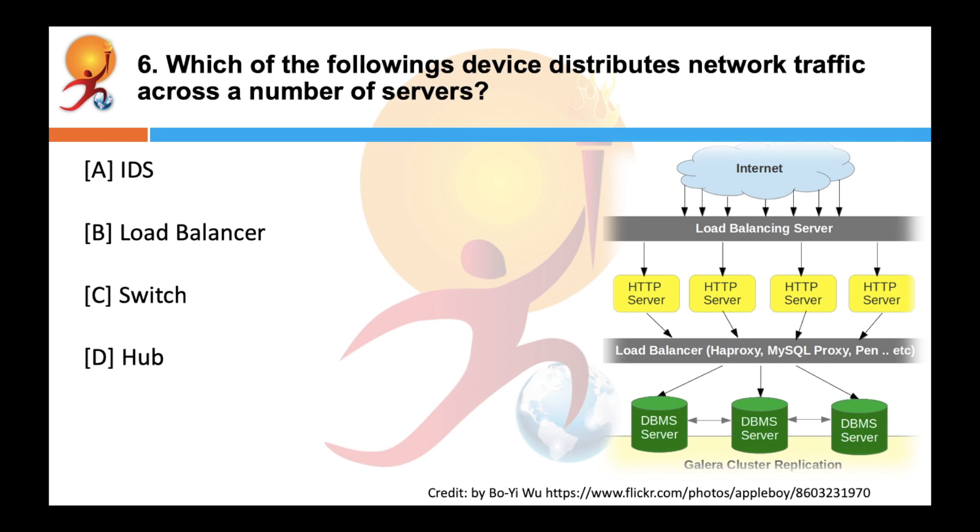Which of the following devices distributes network traffic across a number of servers? Correct answer is load balancer. It is a device that acts as a reverse proxy and distributes network or application traffic across a number of servers.